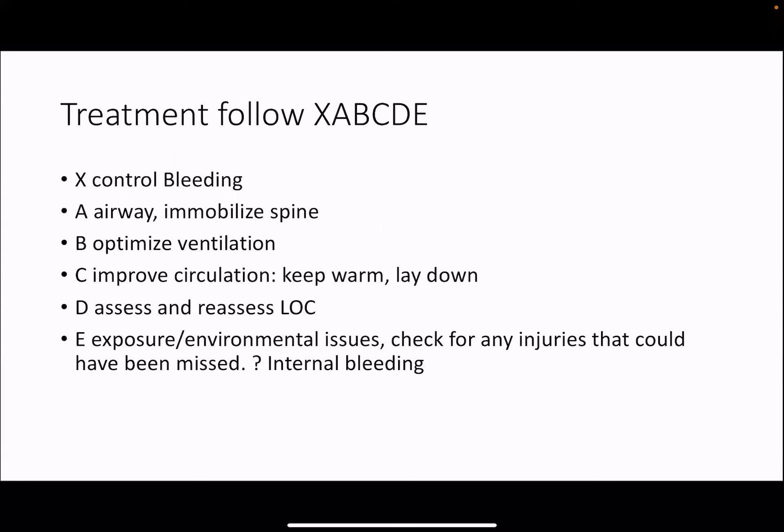Treatment, after you've recognized shock, follows your X, A, B, C, D, E. Number one: control bleeding — the big priority for hemorrhagic hypovolemic shock — then airway, immobilize the spine, optimize ventilation, improve circulation, keep them warm, lie them flat, assess and reassess the level of consciousness, and E for exposure and environmental issues. Check for any injuries that could have been missed, like internal bleeding.